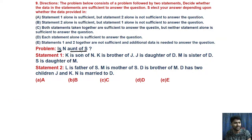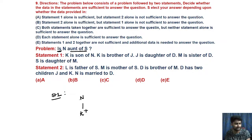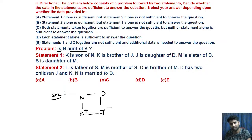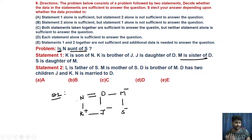The next question is a blood relation problem: is N an aunt of S? Taking statement 1 alone: K is the son of N — so N is the parent but gender is uncertain. K is the brother of J. J is the daughter of D. So N and D are a couple. M is the sister of D. S is the daughter of M. Since we do not know N's gender from statement 1 alone, N could be an uncle or an aunt. Therefore statement 1 is not sufficient.